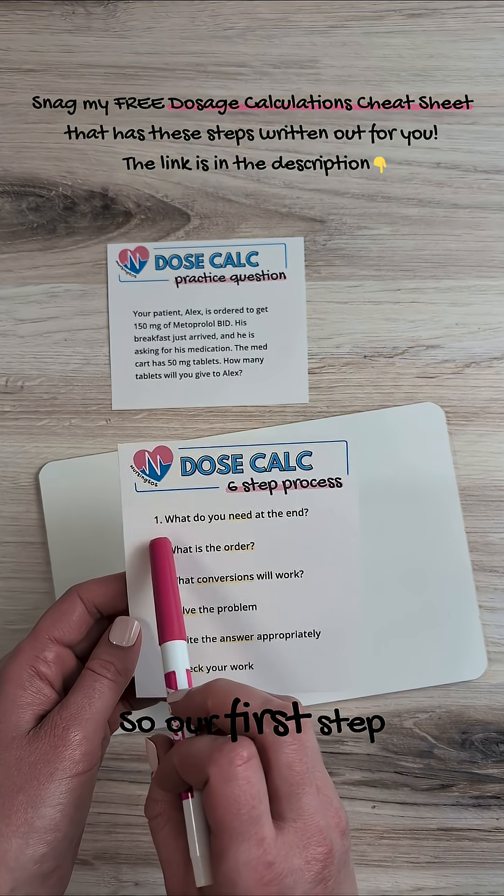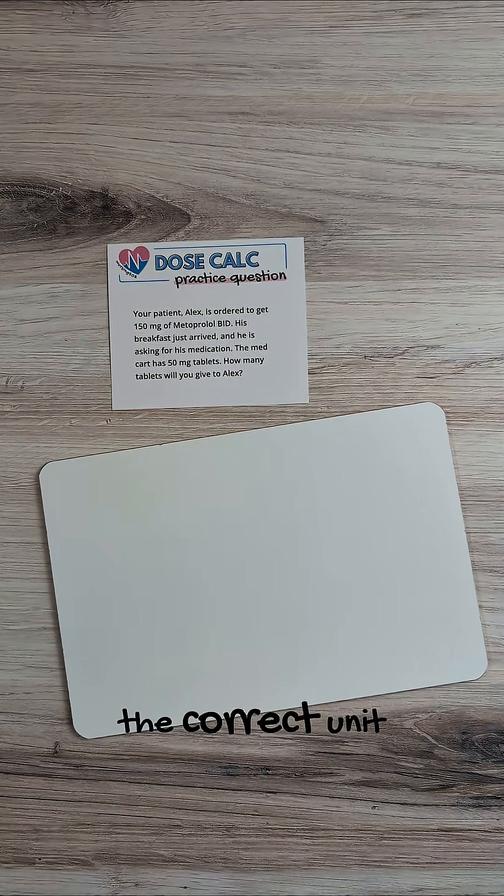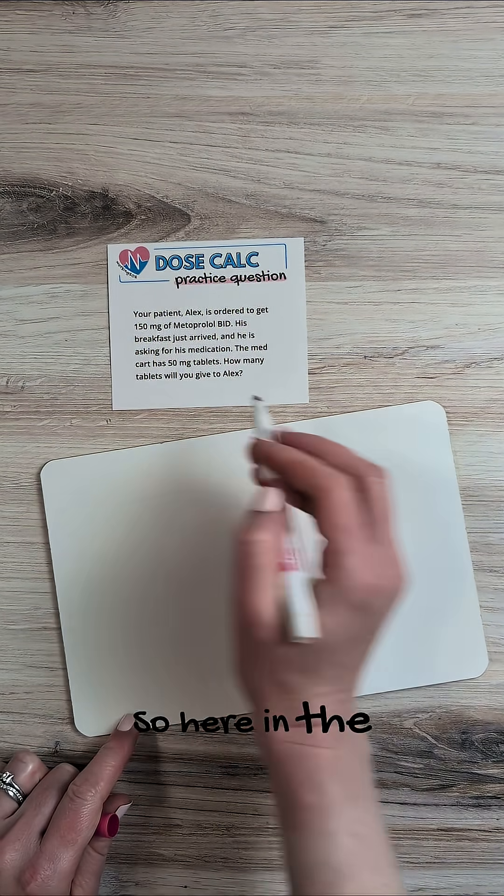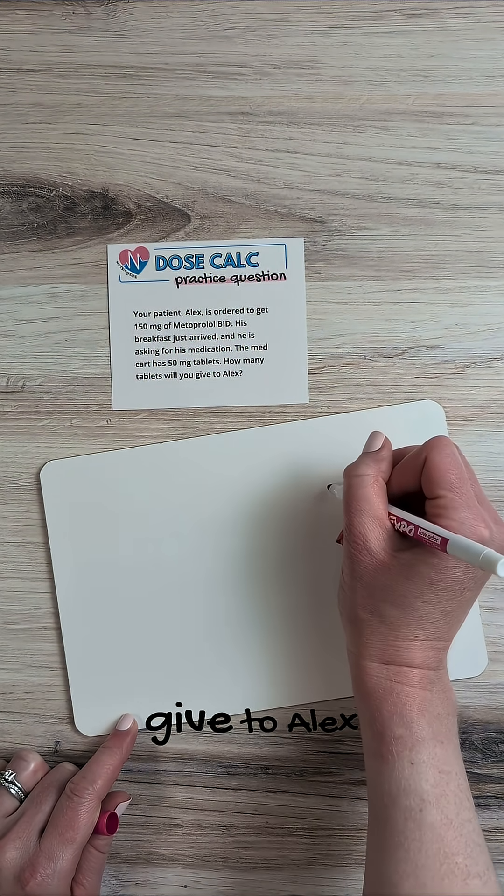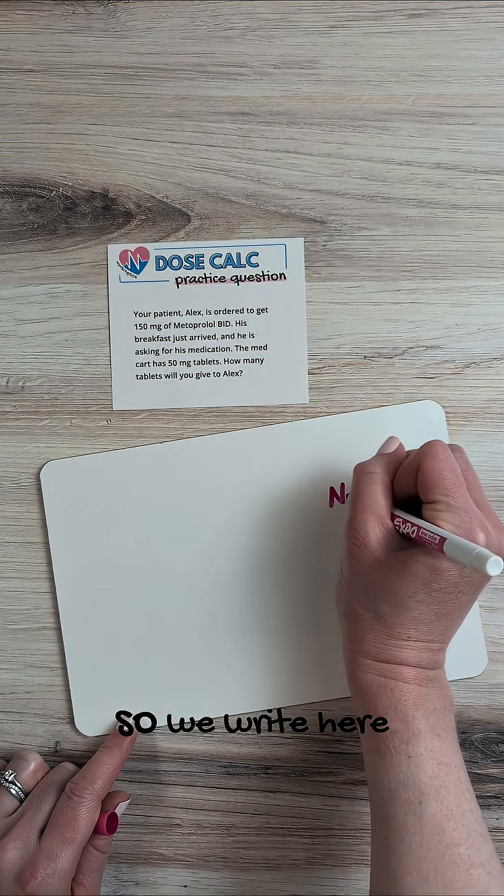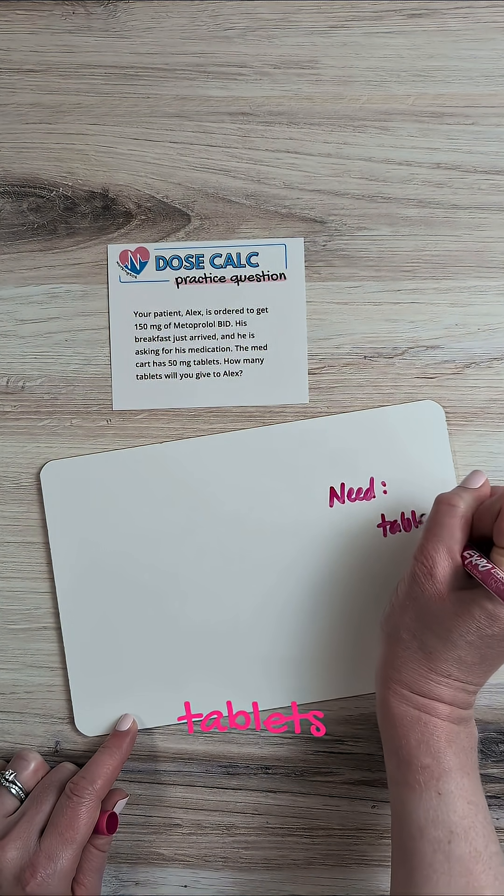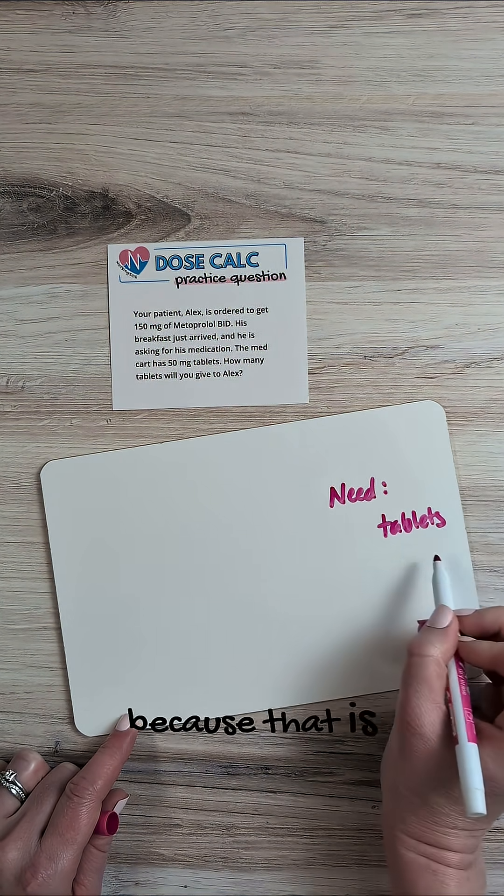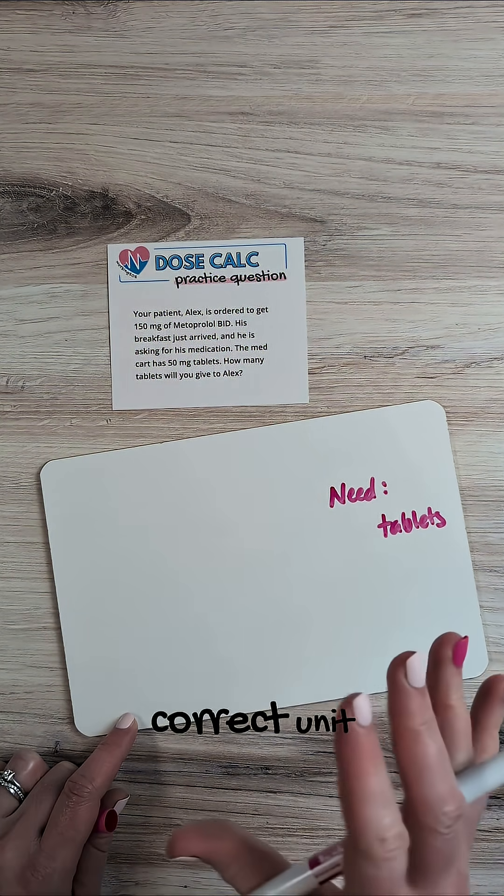So our first step here is what do we need at the end? We always want to make sure that we're solving the correct units. So here in the question, it's asking how many tablets we're going to give to Alex. So we write here on the right hand side, we're going to write tablets because that is what we need to end up with at the end. We want to make sure we're solving for the correct unit.